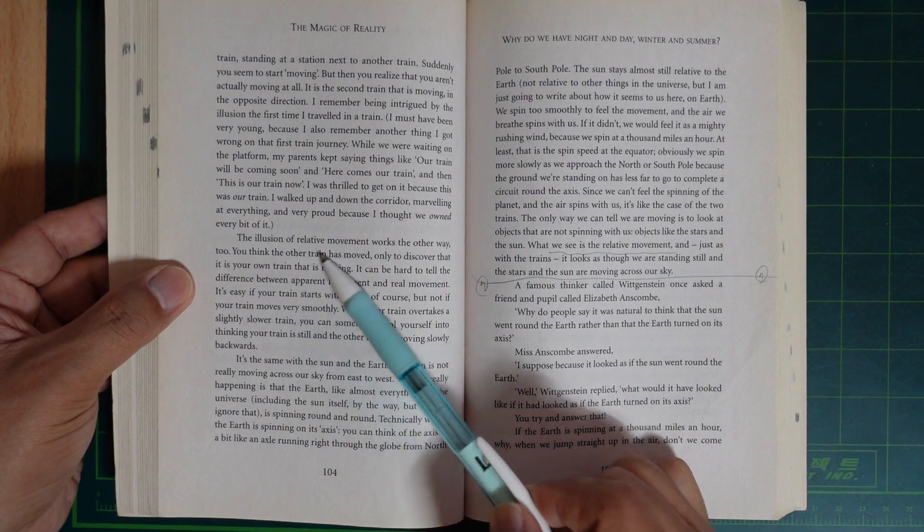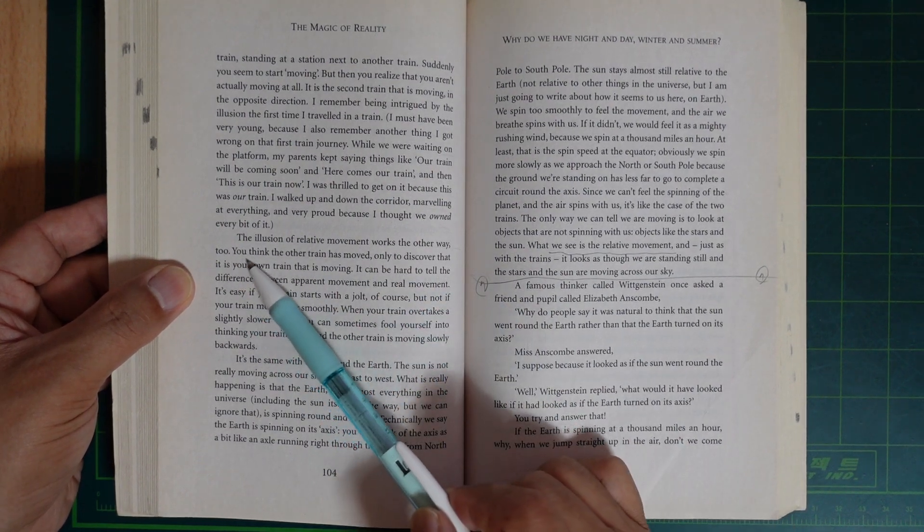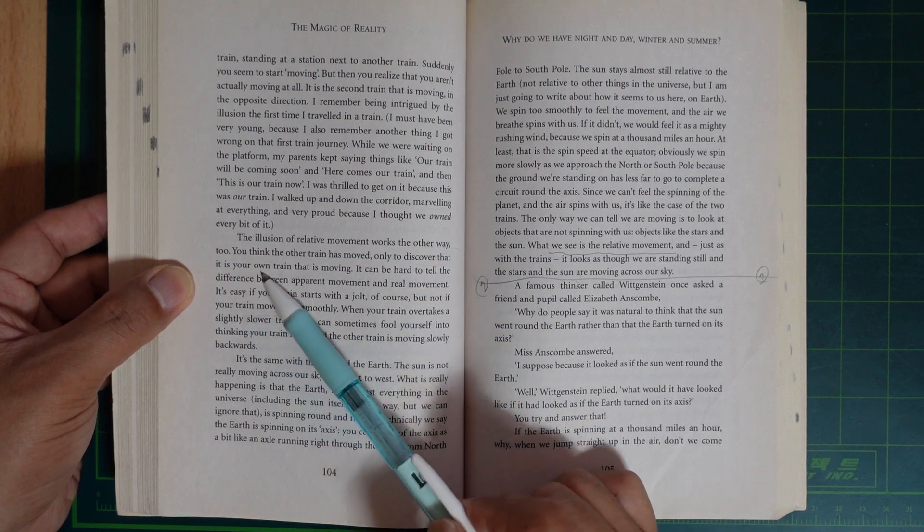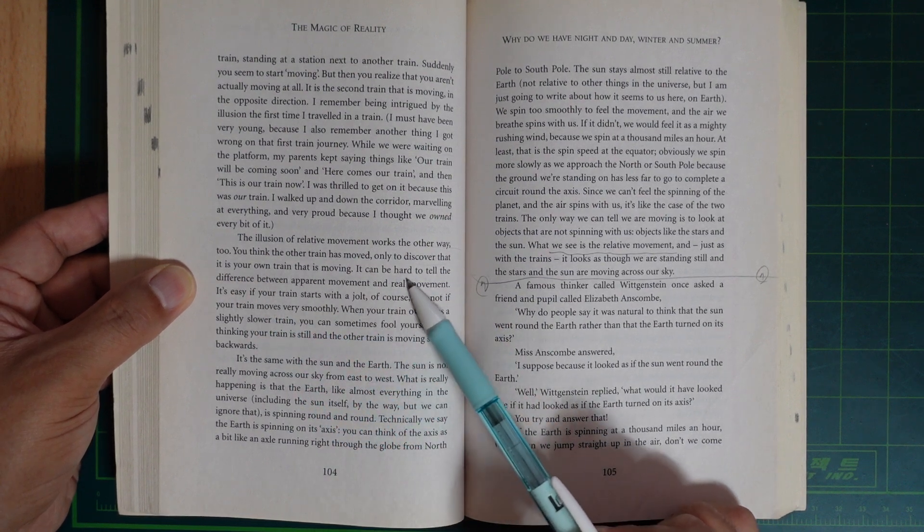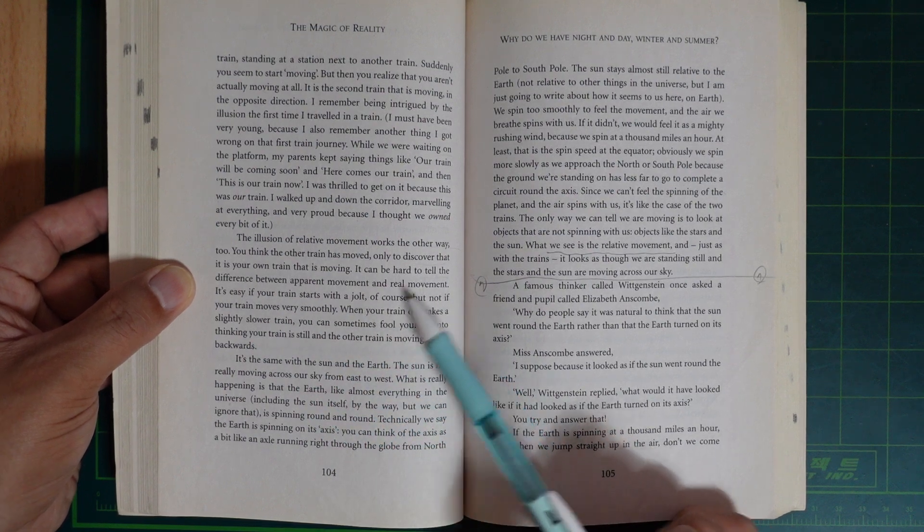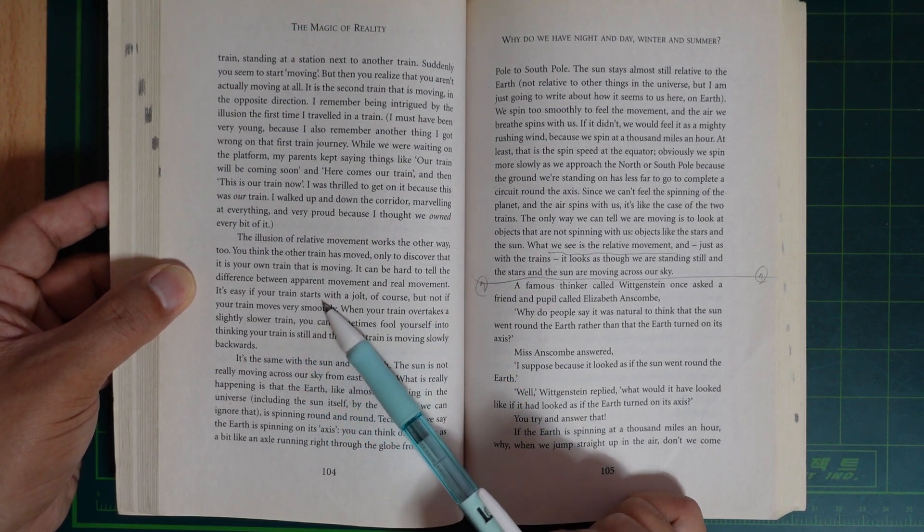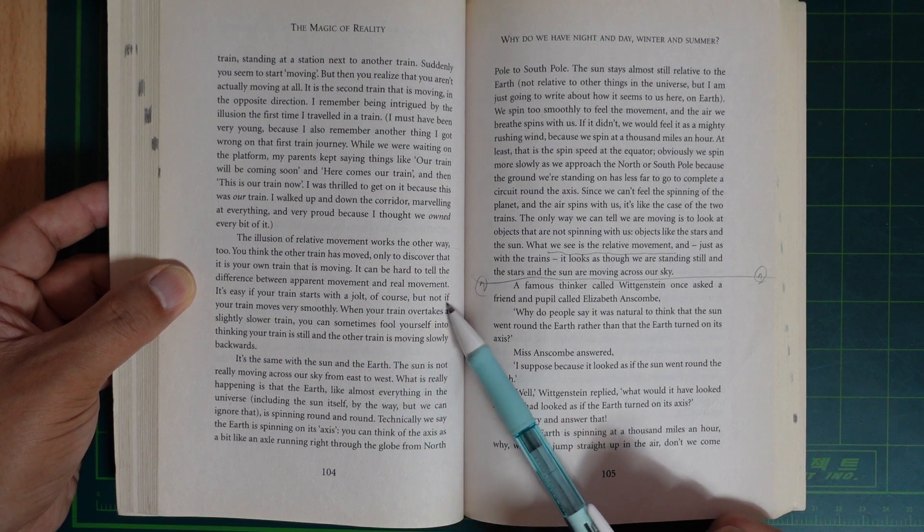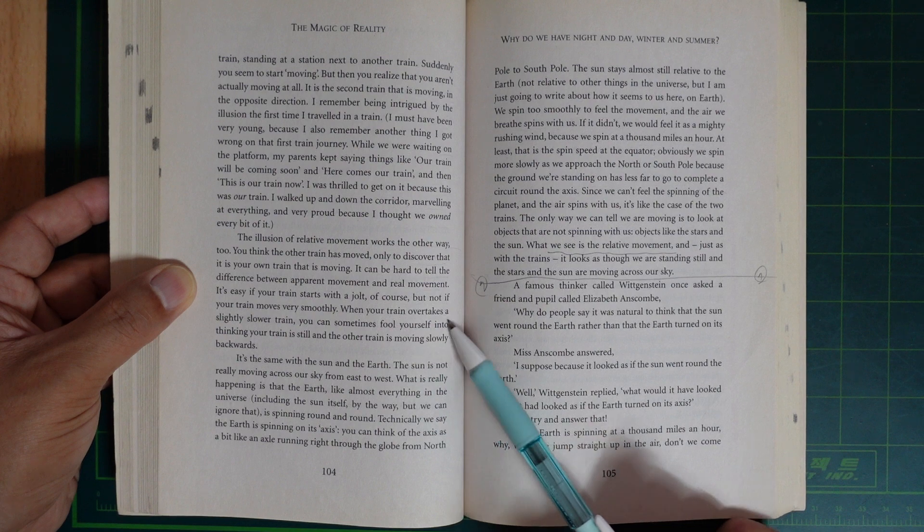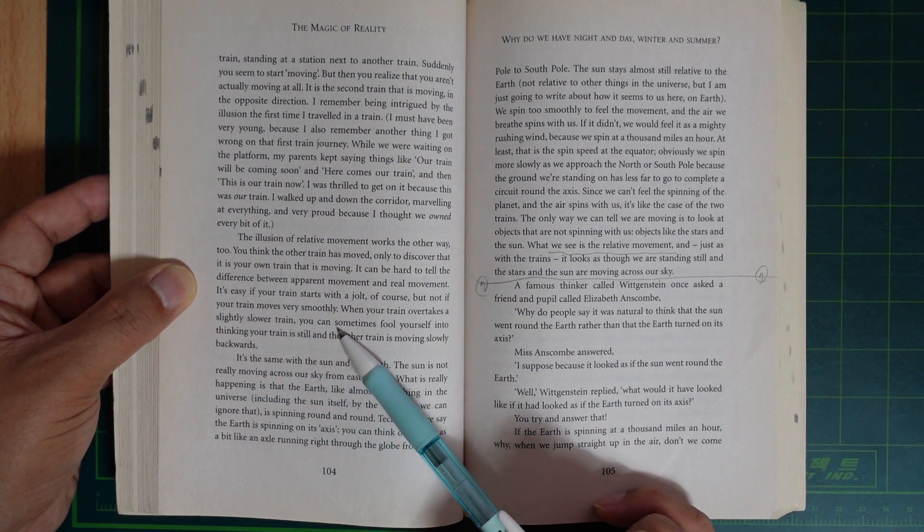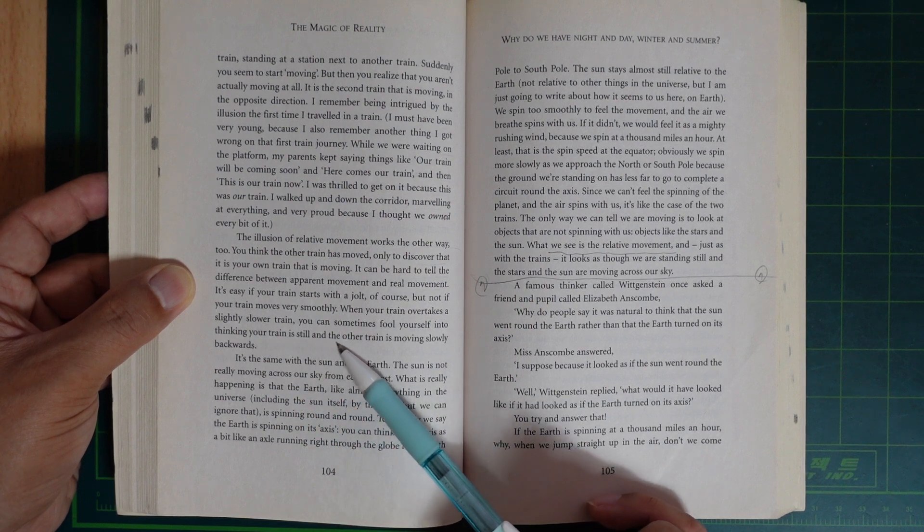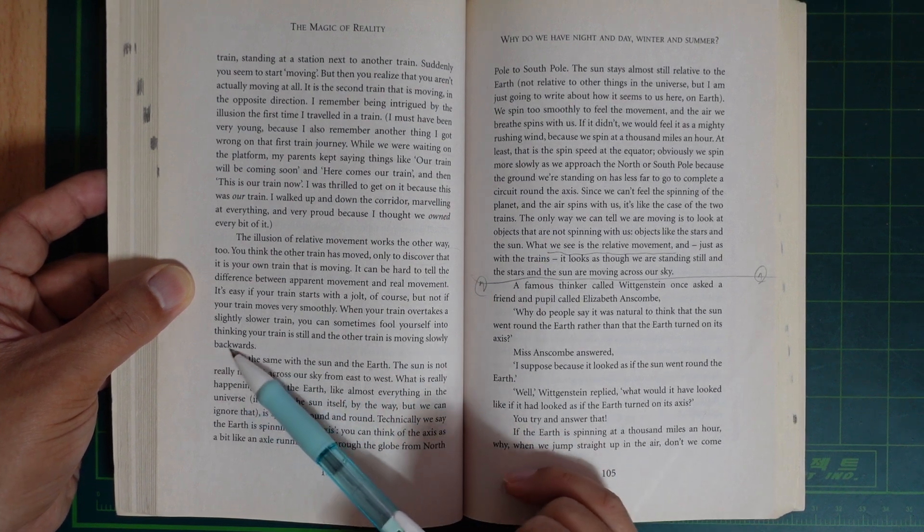The illusion of relative movement works the other way too. You think the other train has moved but then discover that it's your own train that's moving. It can be hard to tell the difference between apparent movement and real movement. It's easy if your train starts with a jolt, of course, but not if your train moves very smoothly. When your train overtakes a slightly slower train, you can sometimes fool yourself into thinking your train is still and the other train is moving slowly backward.